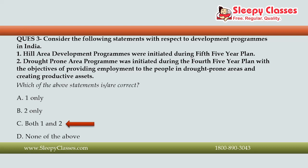The Hill Area Development Program was created during the 5th Five Year Plan. We studied the case study of Burmaur, a tribal area, and how infrastructure development brought changes to people there. The Drought Prone Area Program was initiated during the 4th Five Year Plan. The initial objective was to improve the quality of land, and in the long term the goal was to provide employment and allow agriculture to flourish.